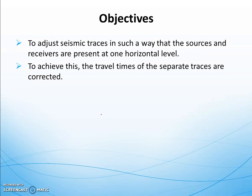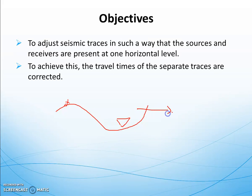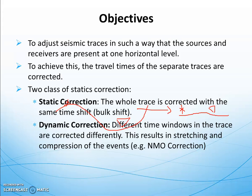The goal is to adjust the geometry such that sources and receivers are presented at one horizontal level. Due to the weathered layer or elevation differences, sources and receivers are located at different levels. Static correction aims to correct this by placing both source and receiver on a horizontal layer. There are two classes of techniques: general static correction, where the whole trace is corrected with the same time shift, or dynamic correction, where different time windows in the trace are corrected differently.